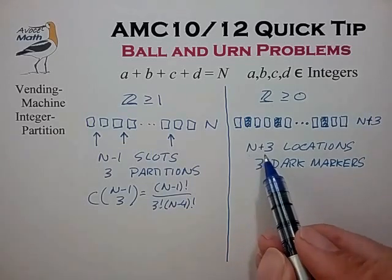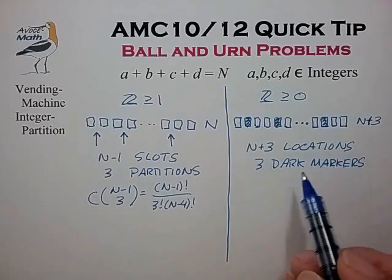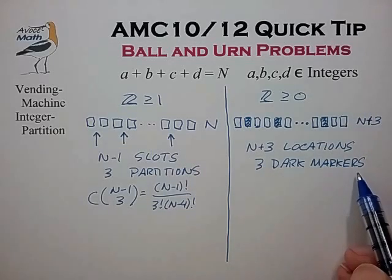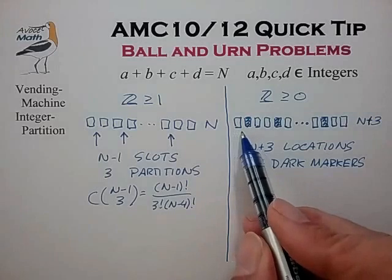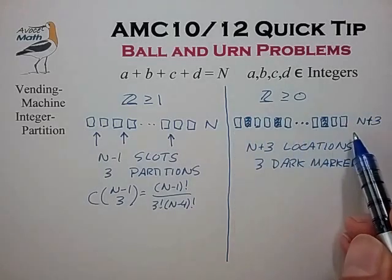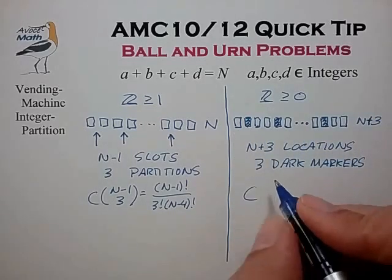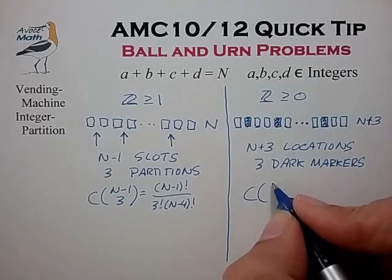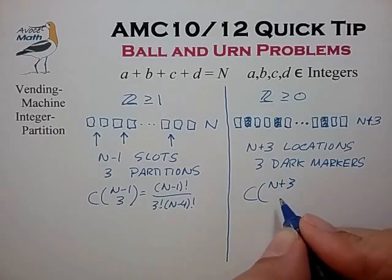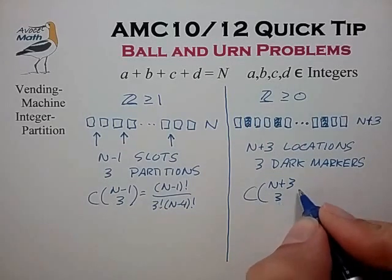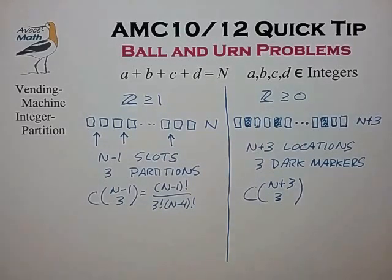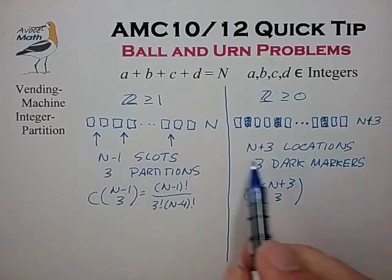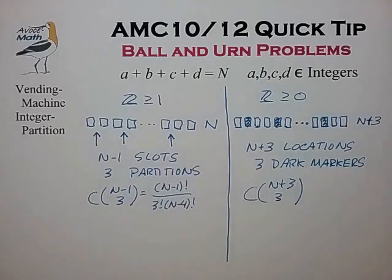So continuing, we have n plus 3 locations and three dark markers to choose among those n plus 3 locations. That works out to the combination expression C(n+3, 3). Those are the two basic forms that appear often on the AMC and AIME. Now let's consider a few variations.